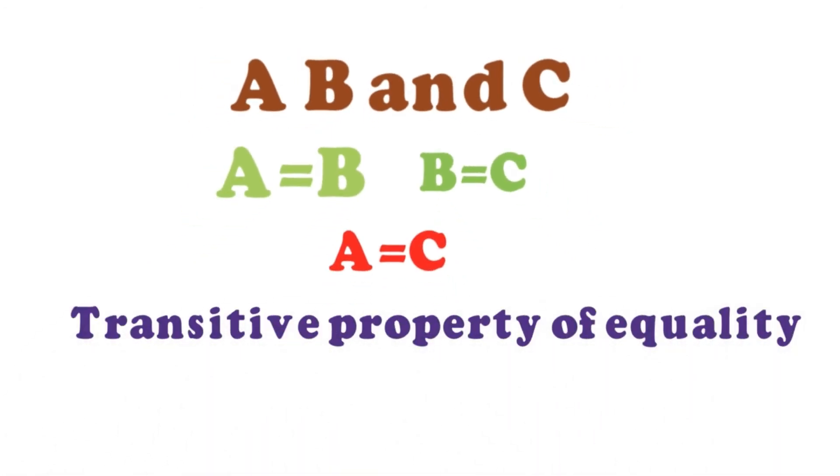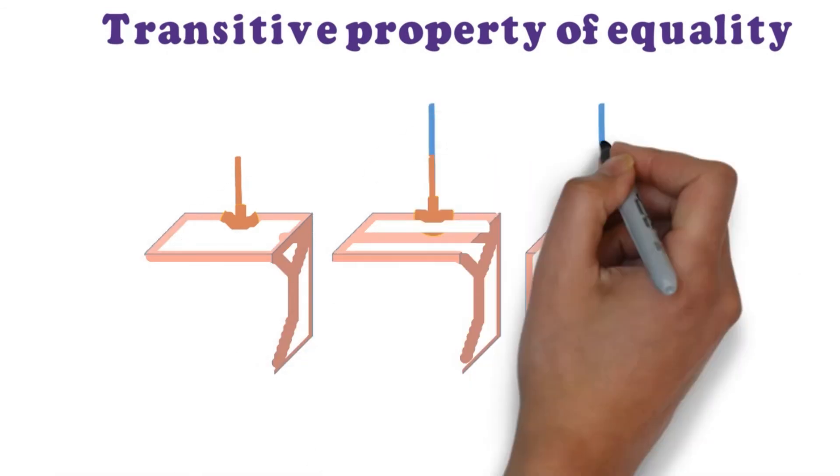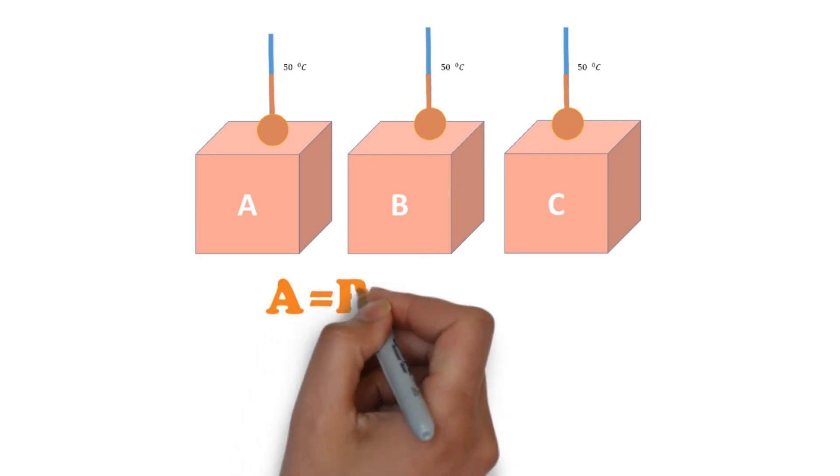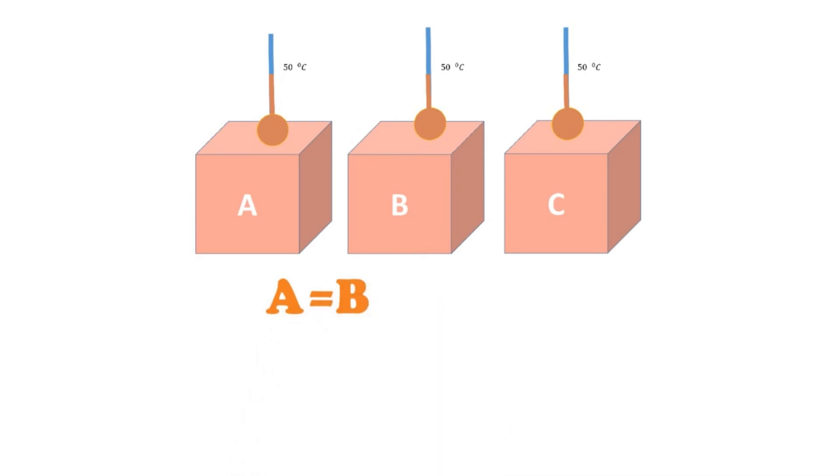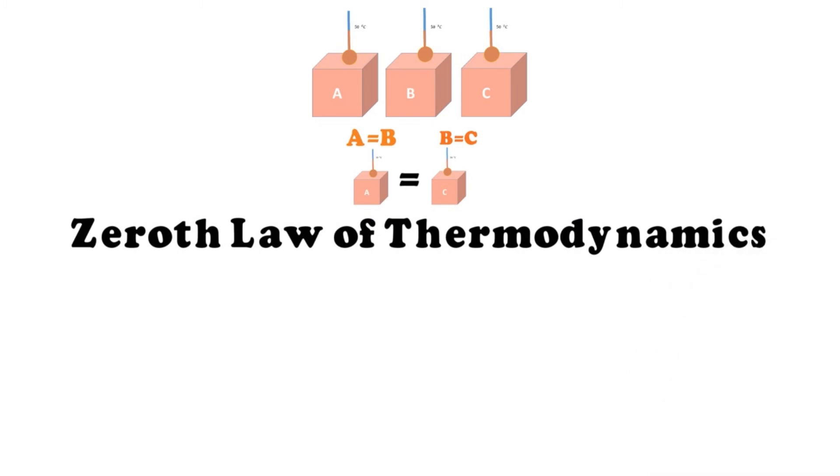Now in the zeroth law of thermodynamics, we use the same property. If we have three objects A, B, and C, and the temperature of object A is equal to object B, and the temperature of object B is equal to object C, then the temperature of object A will also be equal to object C. And this is known as the zeroth law of thermodynamics.